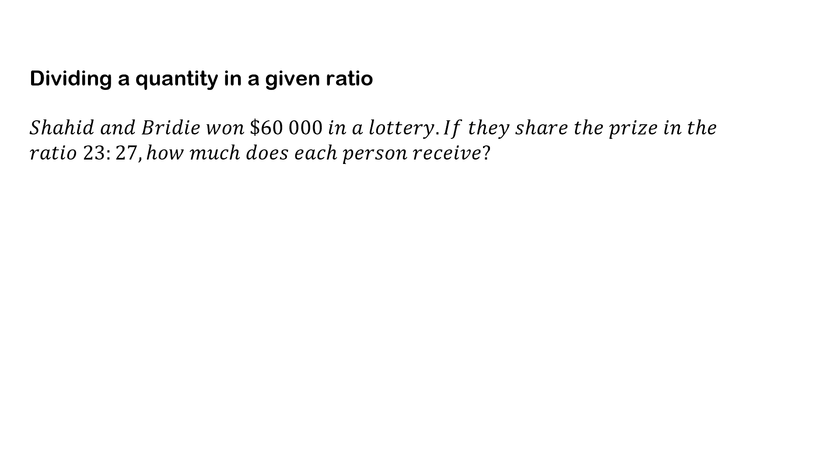So here we have dividing a quantity in a given ratio. Shahid and Brydie won $60,000 in a lottery. If they share the prize in the ratio of 23 to 27, how much does each person receive? So I know my total is $60,000, and this is equal to our 23 parts that Shahid gets and the 27 parts that Brydie gets. So I know that this $60,000 is made up of 50 parts.